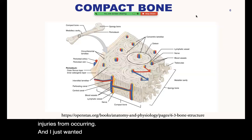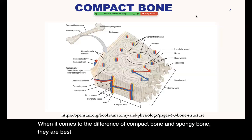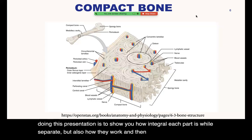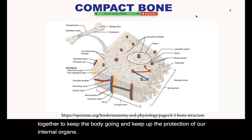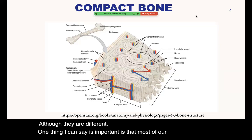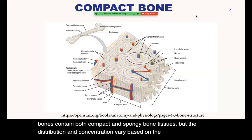I wanted to lastly touch on histology and why bones are so important. The difference between compact bone and spongy bone is best explored through histology, which is a good reason for doing this presentation — to show how integral each part is while separate, but also how they work and interchange together to keep the body going and protect our internal organs. Most bones contain both compact and spongy bone tissues, but the distribution and concentration vary based on the bone's overall function.